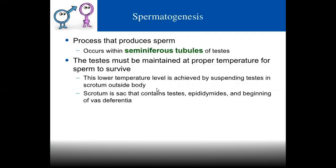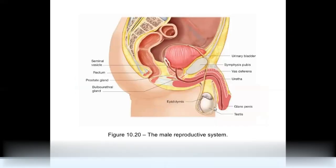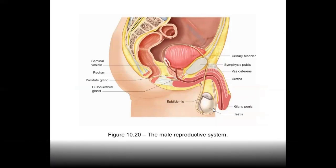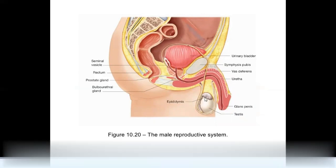The testes produce sperms and testosterone hormone. In the picture we can see the epididymis, testes, glans penis, urethra, vas deferens, pubic symphysis, urinary bladder, seminal vesicle, prostate gland, rectum, and anus.